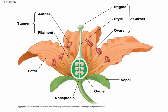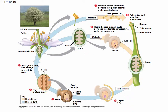Now let's take a closer look at the life cycle of flowering plants. Starting with the sporophyte — notice that in the anther, you have spores produced that germinate and develop into pollen grains. A pollen grain is actually a multicellular gametophyte; it only has three or four cells, but it's still a gametophyte. And the pollen grains are haploid.